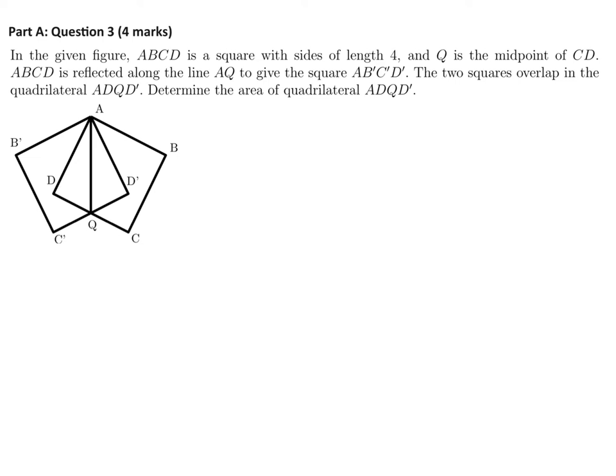So the square has side length four, so that means that's four right there. And then this Q cuts DC in half, because it's the midpoint. So that means D to Q, that length is two. And because of the symmetry of this diagram, this quadrilateral ADQD prime is really two times this triangle.